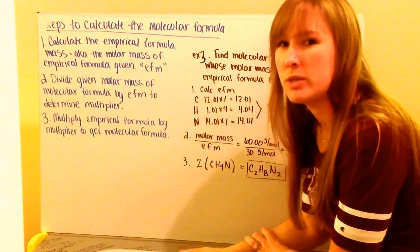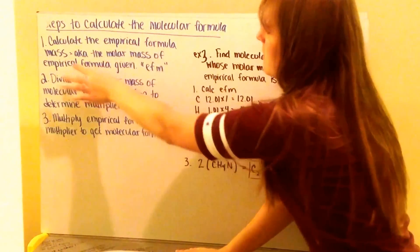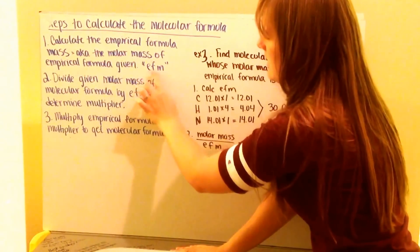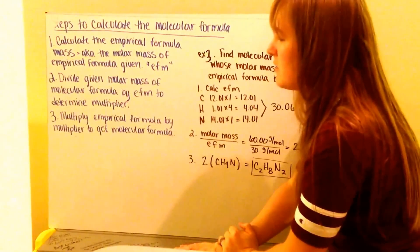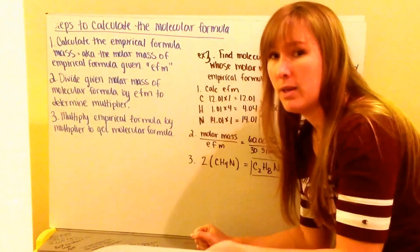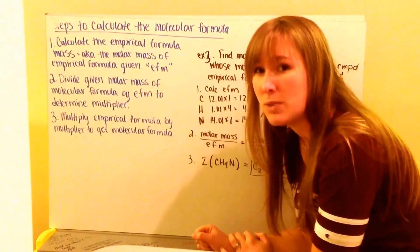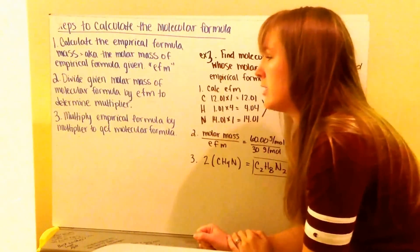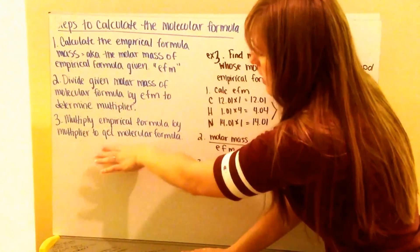Next I need to know how to calculate molecular formulas. There's a set of steps. First, calculate my empirical formula mass (EFM) — the molar mass of my empirical formula. Next, divide my given molecular molar mass by my EFM to determine my multiplier, since my molecular formula is some multiple larger than my empirical formula. Then multiply my empirical formula by that multiplier to get my molecular formula.